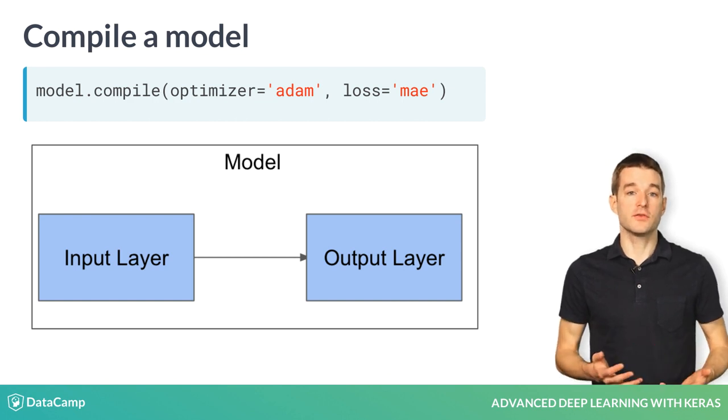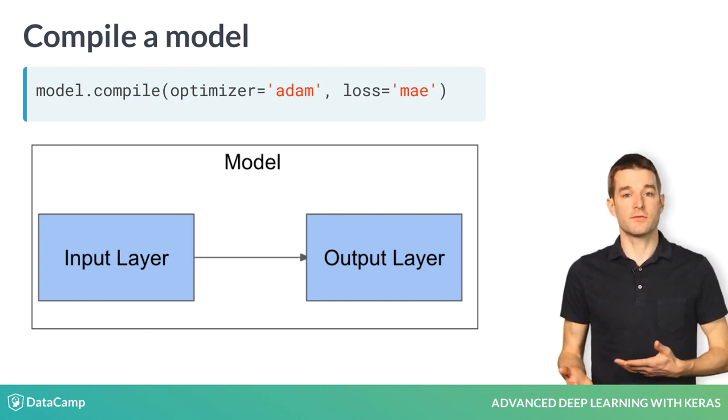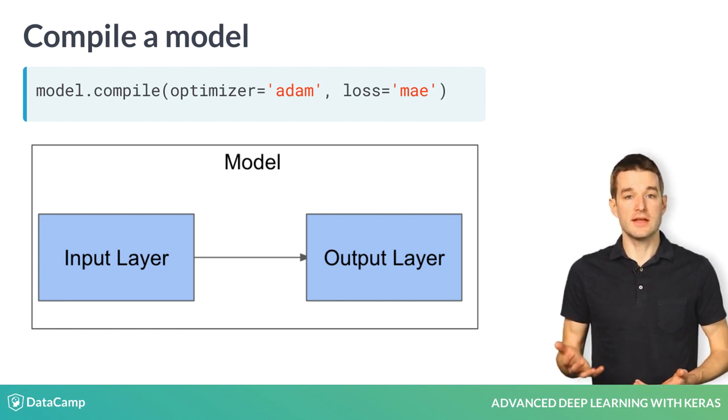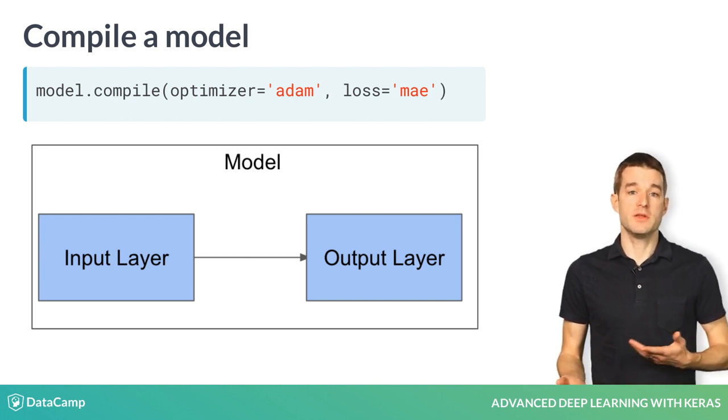During compilation, you also select a loss function. In this case, we use mean absolute error, which is a good general purpose error function for Keras models, as it is a little bit less sensitive to outliers. You could also use mean squared error, which would be equivalent to traditional linear regression.